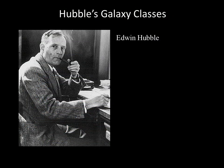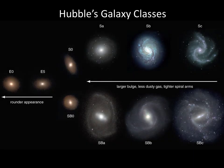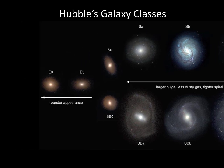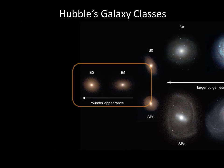The astronomer Edwin Hubble invented a system for classifying galaxies that organizes the galaxy types into a diagram shaped like a tuning fork. Elliptical galaxies appear on the handle at the left, designated by the letter E and a number. The larger the number, the flatter the elliptical galaxy. An E0 galaxy is a sphere and an E7 is highly elongated.